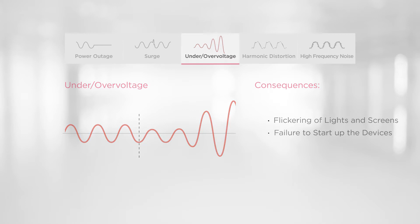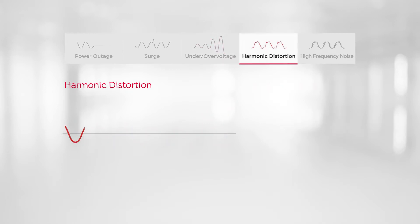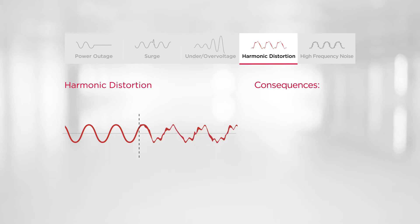Another type of power event is called harmonic distortion, which is a distortion of the waveform typically caused by the non-linear load. It might result in cable overheating and loss of system efficiency.